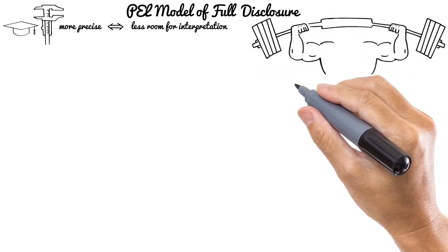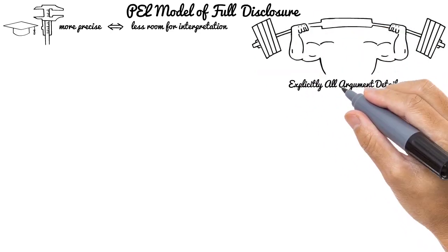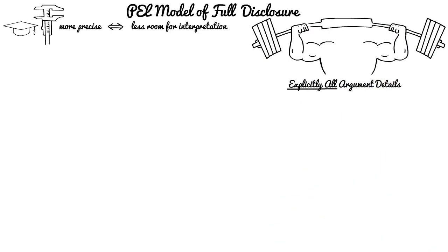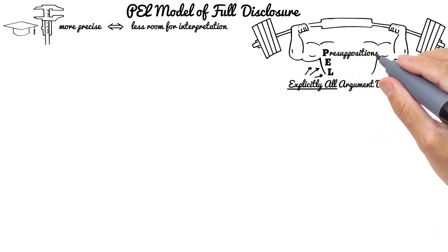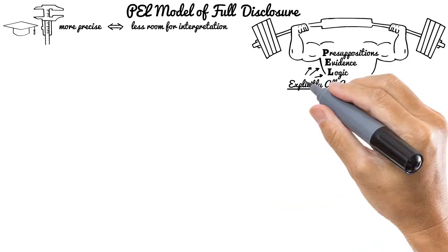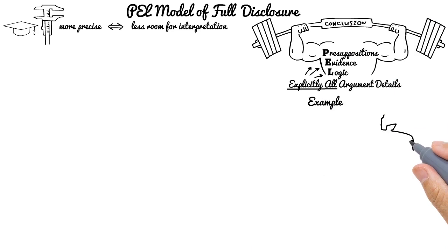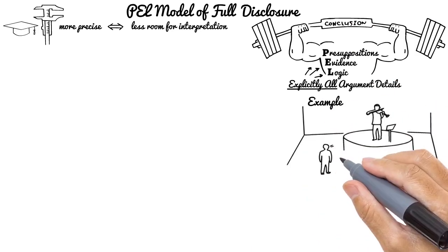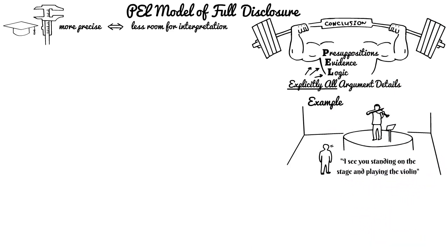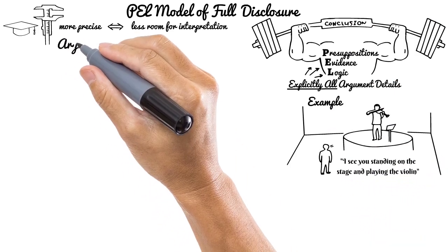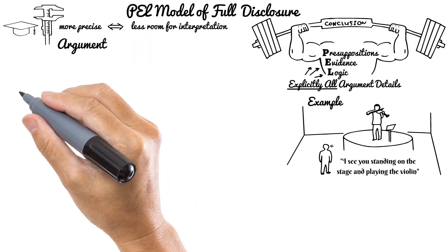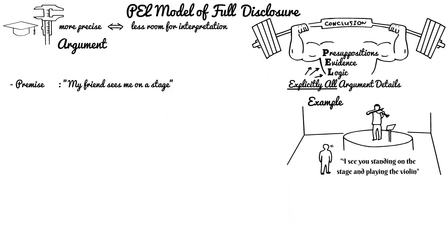The main idea is to announce explicitly all argument details including all premises. The basic model is named by acronym PEL, combining presuppositions, evidence, and logic to support scientific conclusions. Let's have an example. Do you remember from previous videos when my friend tells me they see me standing on the stage playing the violin? From common sense, the conclusion seems certain to be true and the argument strong, isn't it?